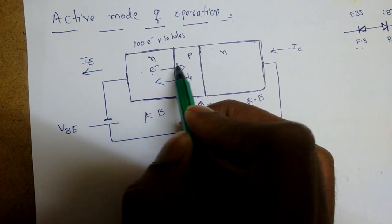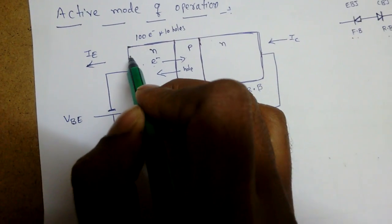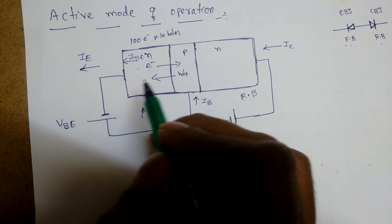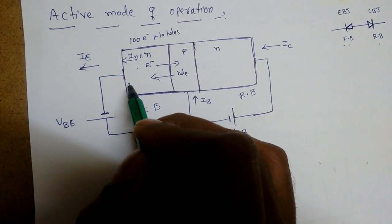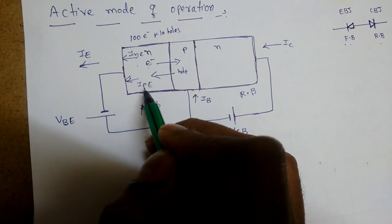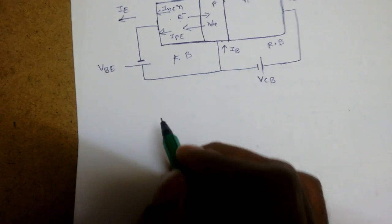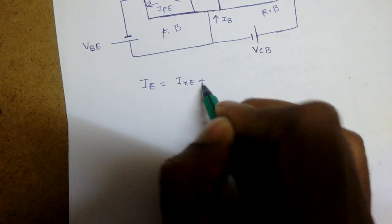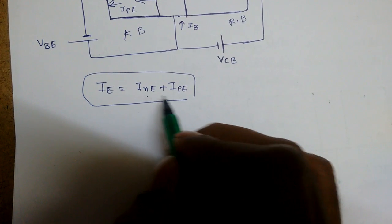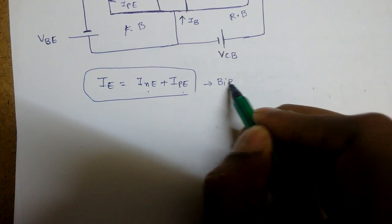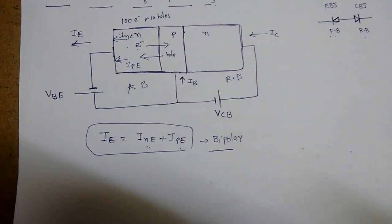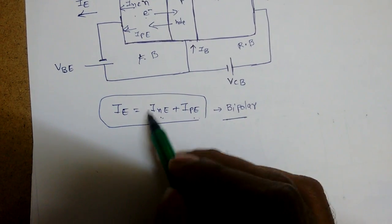When electrons move from N to P, the current direction is opposite to electron flow. The emitter current IE has a component due to electrons (INE) and a component due to holes (IPE). So IE is due to electrons as well as holes. Since current conduction is by two polarities — electrons and holes — that is why it is called bipolar.